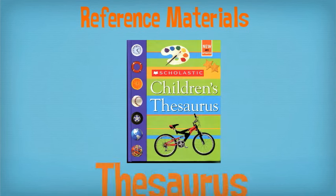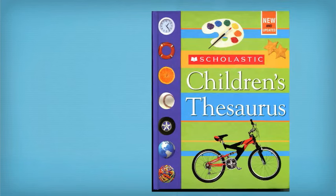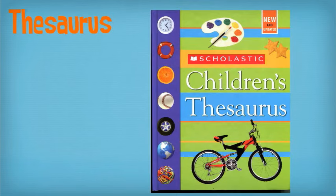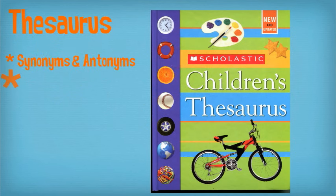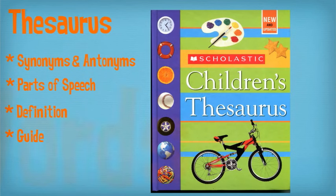The next type of reference material we're going to learn about, and the last one, is the thesaurus. A thesaurus is mainly used for synonyms. Sometimes they can have antonyms. They also tell you the parts of speech, just like a dictionary, and the definitions. They use guide words, and they're in alphabetical order.